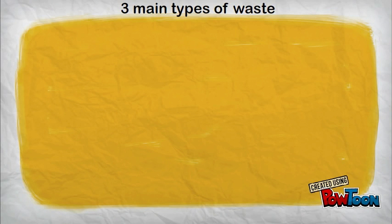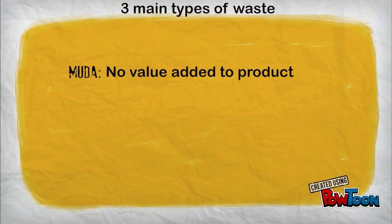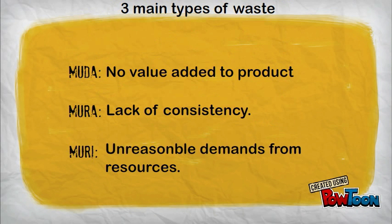There are three main waste categories, known in Japanese as muda, where no value is added to the product; mura, where product quality is inconsistent; and muri, where resources overstretch plant facilities due to poor planning.